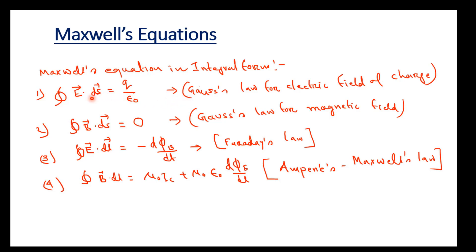The first law is Gauss law in electrostatics — from this we can study electrostatics. The second is for the magnetic field. The third shows how we can relate the magnetic field to current, and the fourth is also the modified Ampere circuital law.